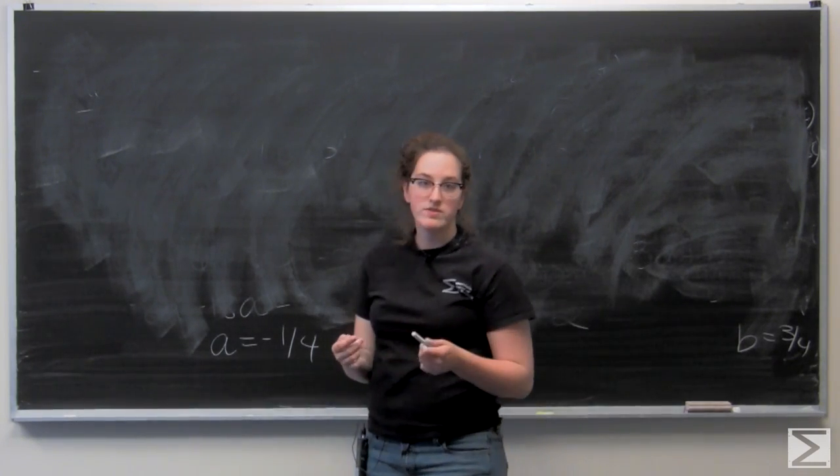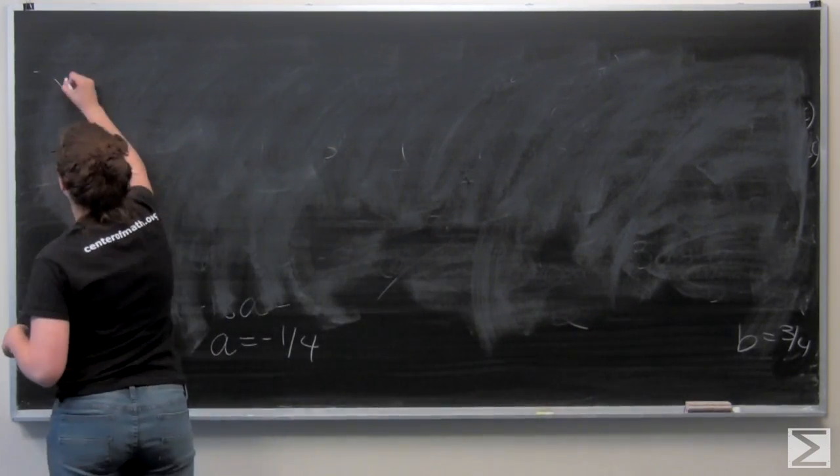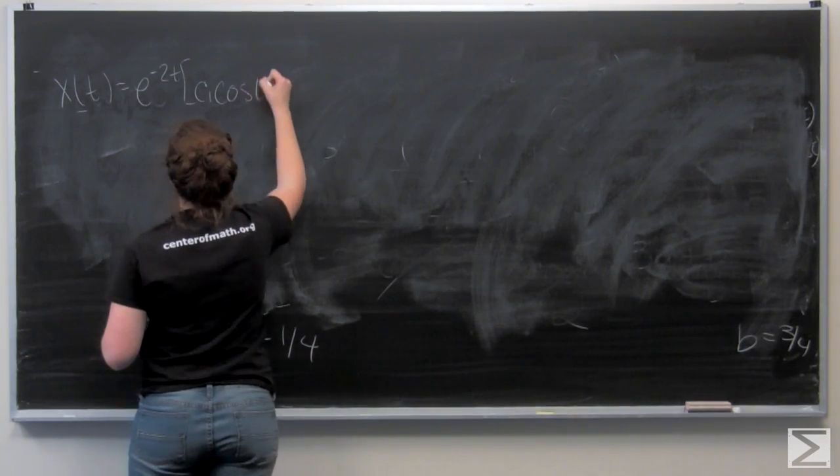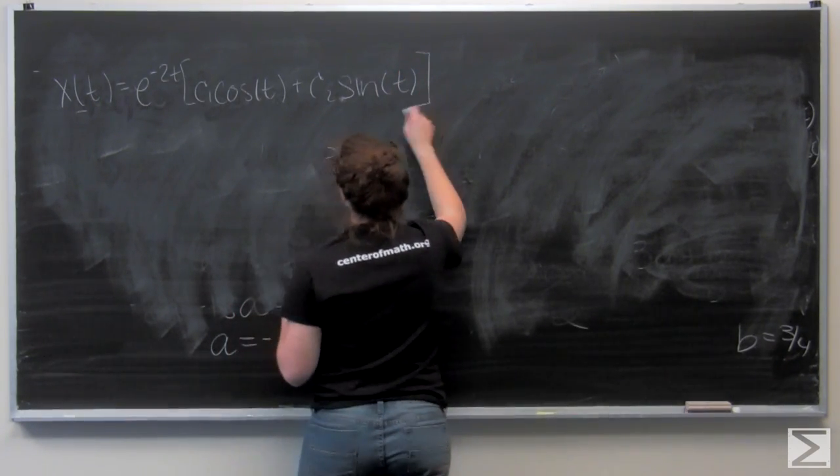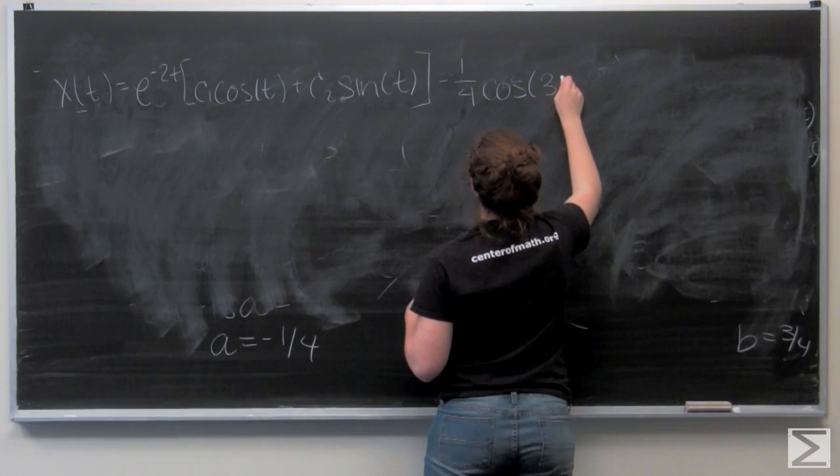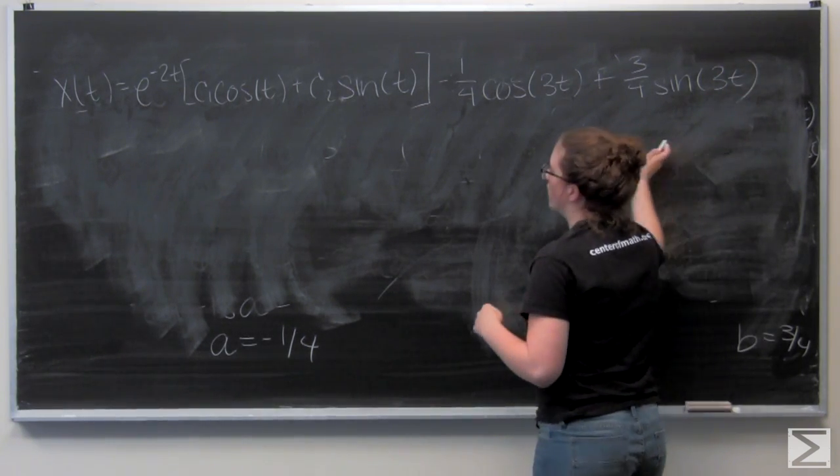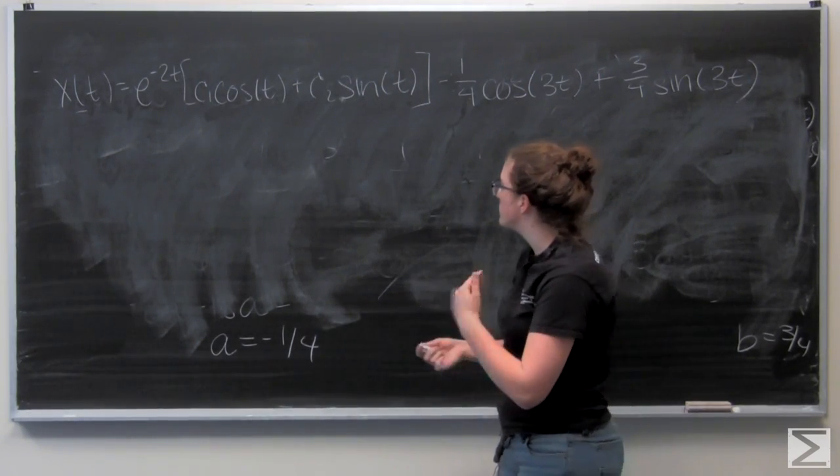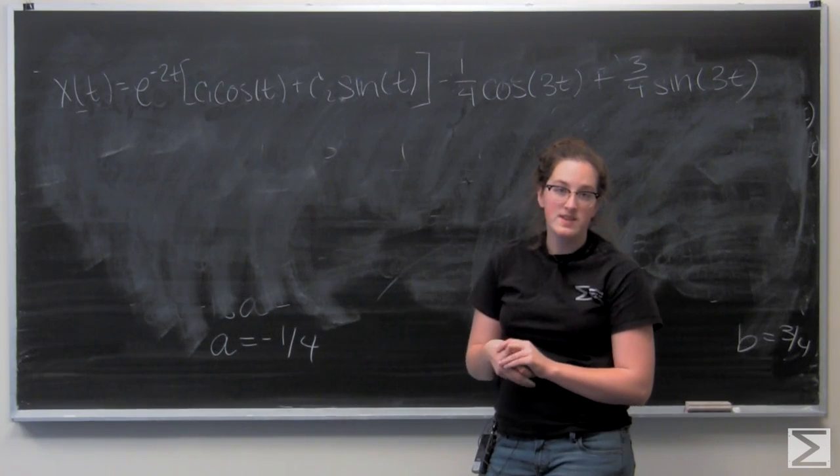So to write the general solution x(t), I need to add xc to xp. So let's look at this. So this whole thing is my general solution x(t). And I don't have any given initial conditions, so this is as far as I can go. c1 and c2 are still some unknown constants. But I do want to find the steady periodic and transient portions of the solution.